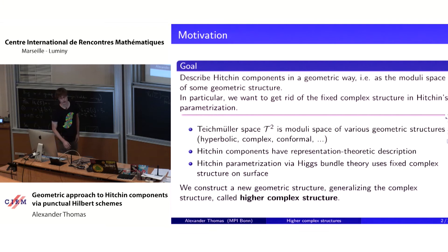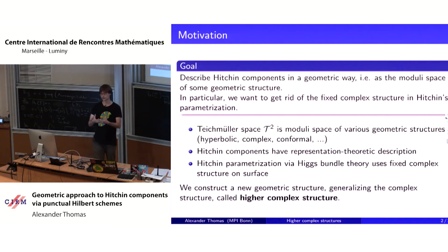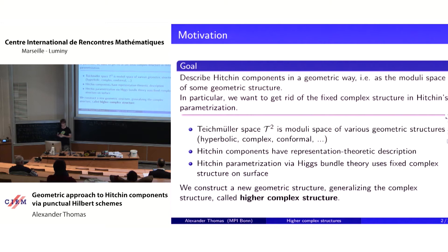In this talk, I will give you at least a program to answer this question. I will construct a new geometric structure on the surface, which we call higher complex structure, because in the n=2 case for Teichmüller space we actually find the complex structure. In some sense, we generalize the complex structure, and not, for example, hyperbolic structures.